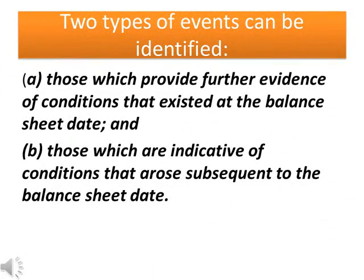Para 4.1. Two types of events can be identified: those which provide further evidence of conditions that existed at the balance sheet date, and those which are indicative of conditions that arose subsequent to the balance sheet date.